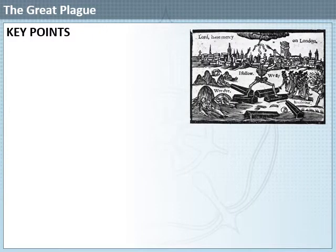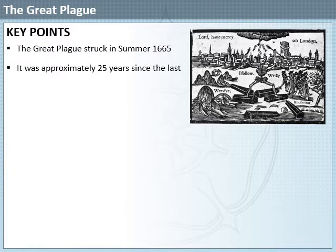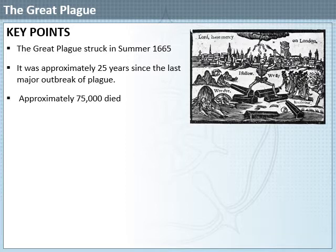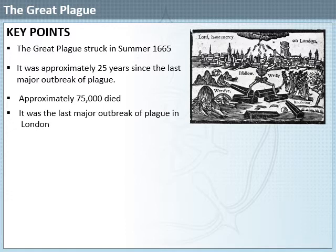Let's start with some key points of the Great Plague. We're looking at summer 1665, and the outbreak was approximately 25 years since the last time the plague had hit London. Approximately 75,000 people died, and this was the last ever major outbreak of the plague in London. Other parts of Britain were also affected by the plague in this summer.